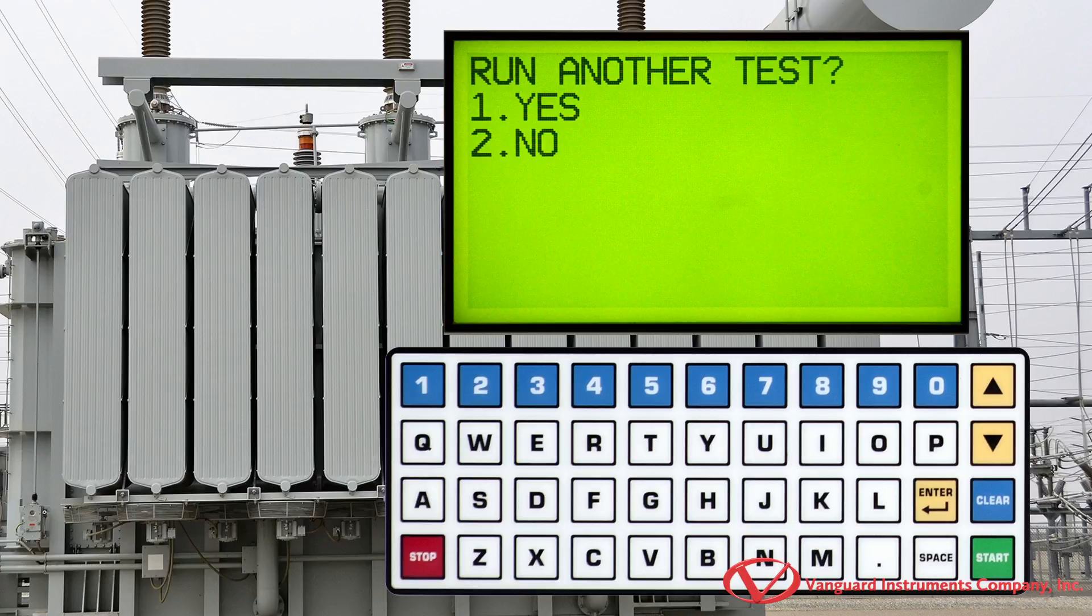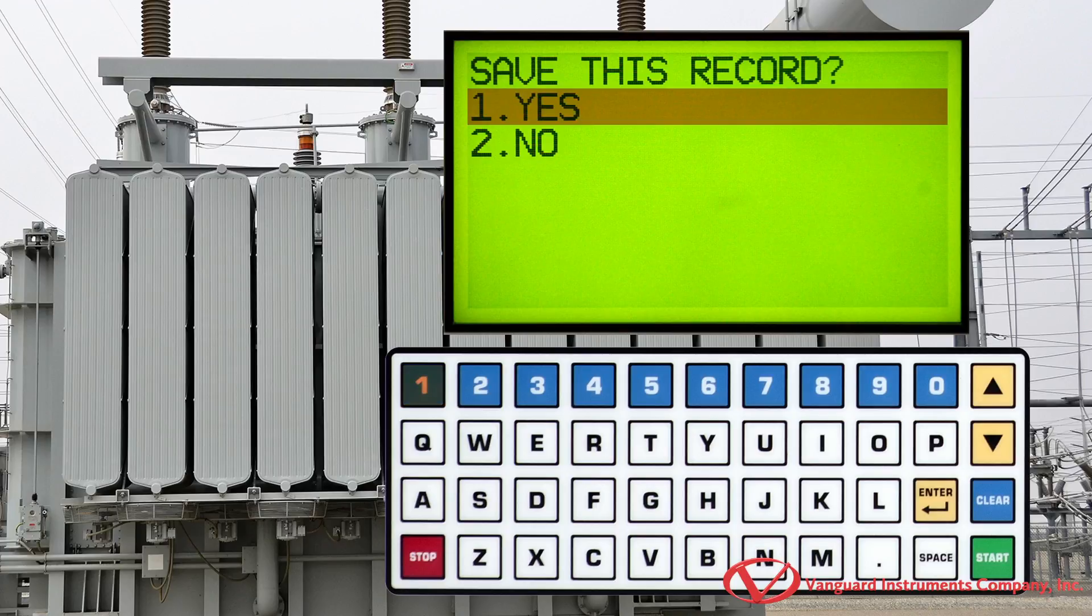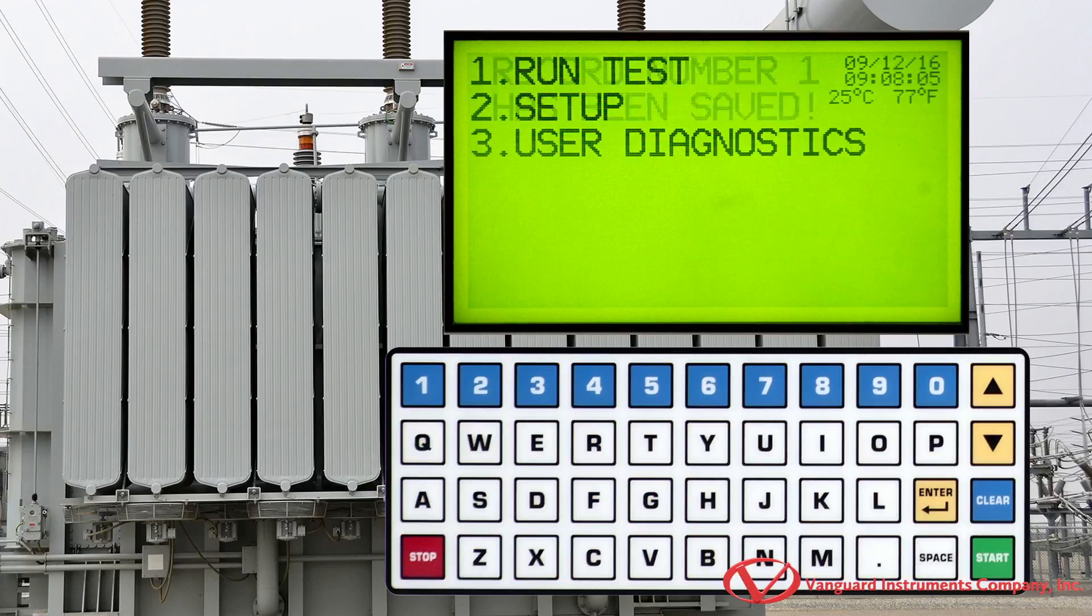If you would like to run another test, you can do so by pressing the 1 key. We'll press the 2 key for no. Let's save our test record by pressing the 1 key. Press any key to return to the main menu.